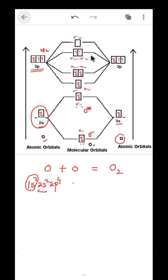In the MO diagram, 2pz always forms a sigma bond, while 2px and 2py form pi bonds and are written above. We now count the electrons to determine the diamagnetic or paramagnetic character and the bond order. There are 4 electrons from the 2p level on each side — 8 total — which are filled into the MOs.